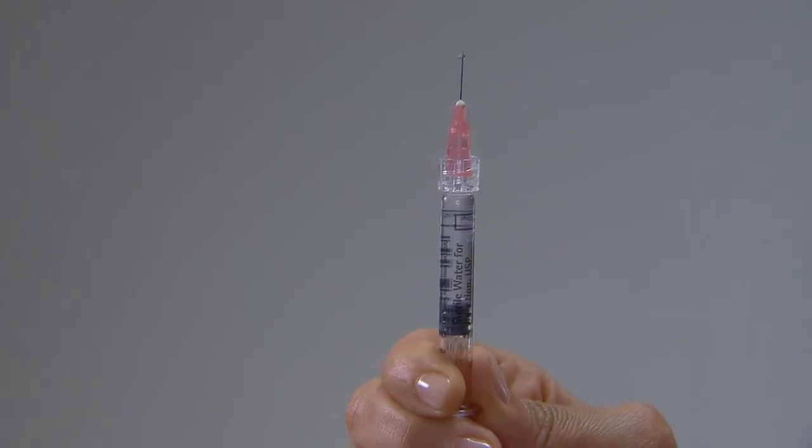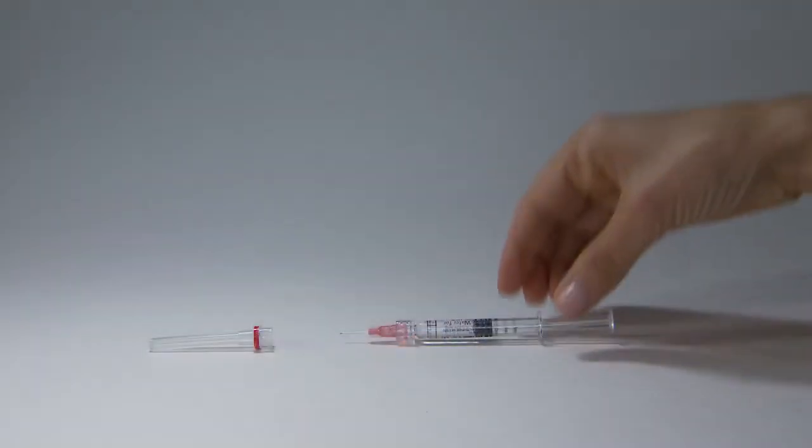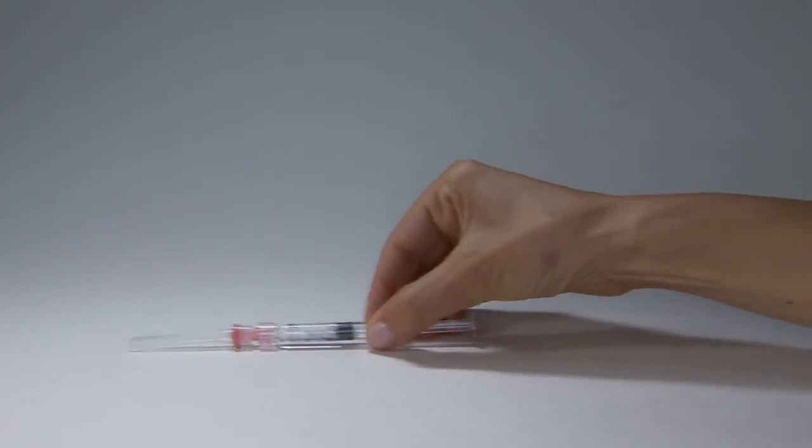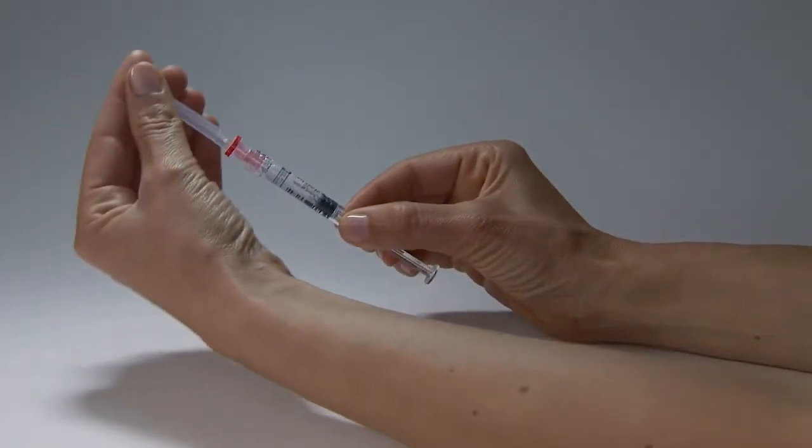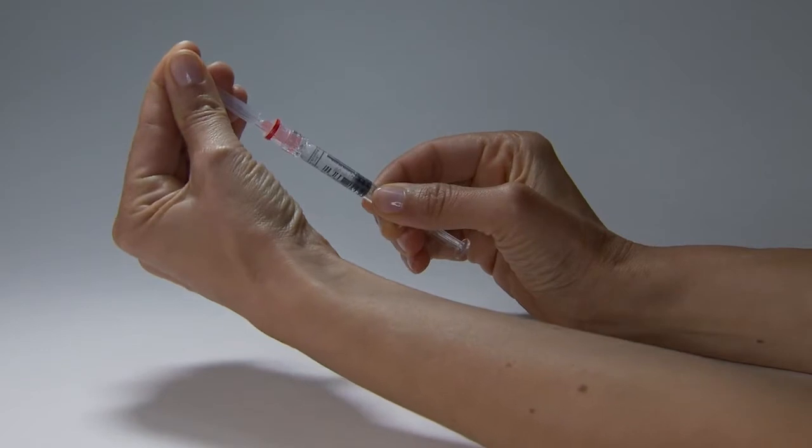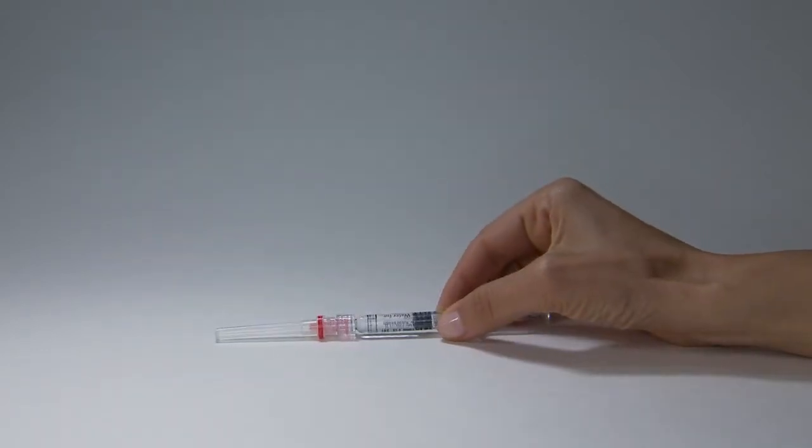A drop or two of liquid will appear at the end of the needle. Carefully recap the needle and lay the syringe on a clean, flat surface. The syringe is now filled with the prescribed dose of Gonal-F RFF and is ready for administration.